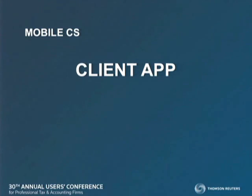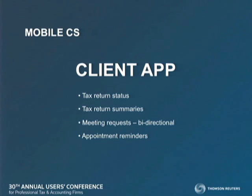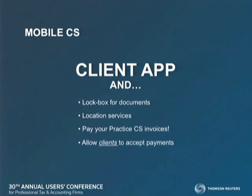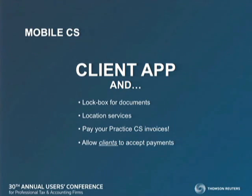At the client level, just a few examples — there are many areas we're looking at. Tax return status: has my return been completed, submitted to the IRS, accepted? Tax return summaries. Meeting requests — again, bi-directional. And appointment reminders. All will be available to your clients through Mobile CS. Additional items: a lockbox for documents available year-round to submit materials, location services for your end clients so they can tell where they are relative to their customers, and the ability to have your clients pay you through their mobile devices, with payments accepted in their accounting system as well.